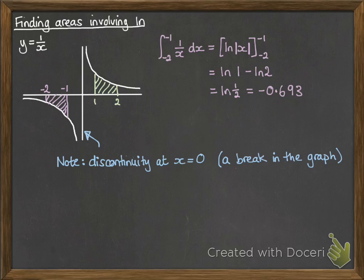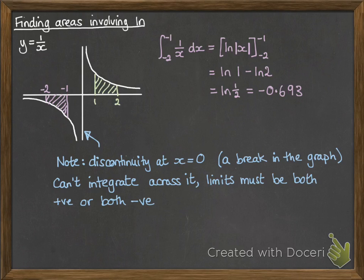Another note: this graph has a discontinuity at x equals 0 — it's called a discontinuous graph because there's a break in it, in this case an asymptote. So you can't integrate across that asymptote; you can't have 0 in the middle of your limits, as it just isn't defined. If you're going to find an area, your limits must be either both positive or both negative.